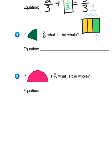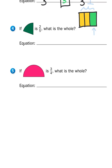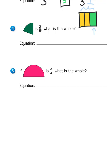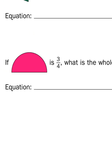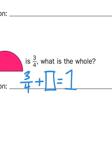So, like in question number five, if I have three-fourths, what is the whole, okay? So, how do I get from three-fourths to four-fourths? So, I'll write my equation. Three-fourths plus something equals one whole or four-fourths.